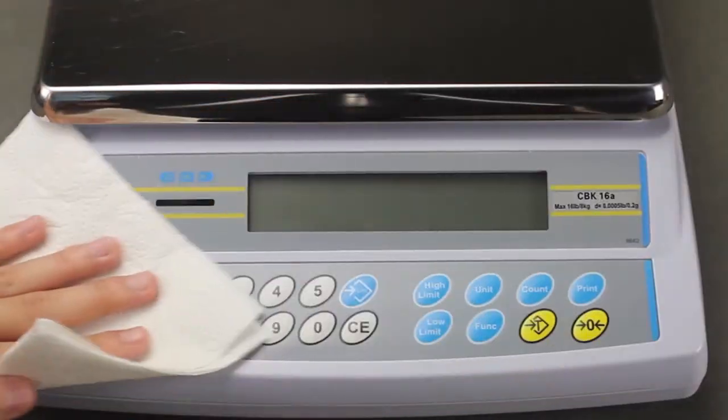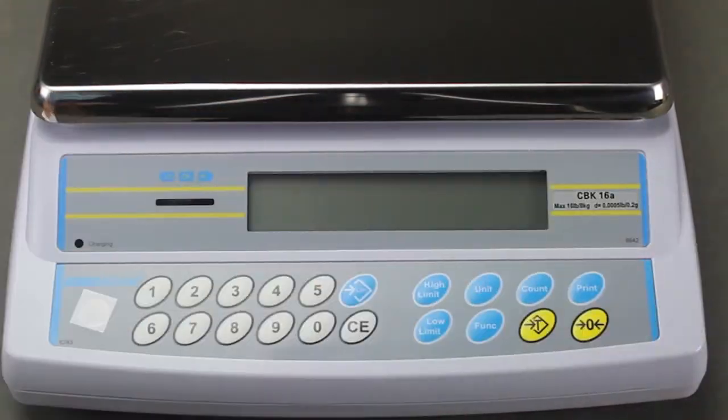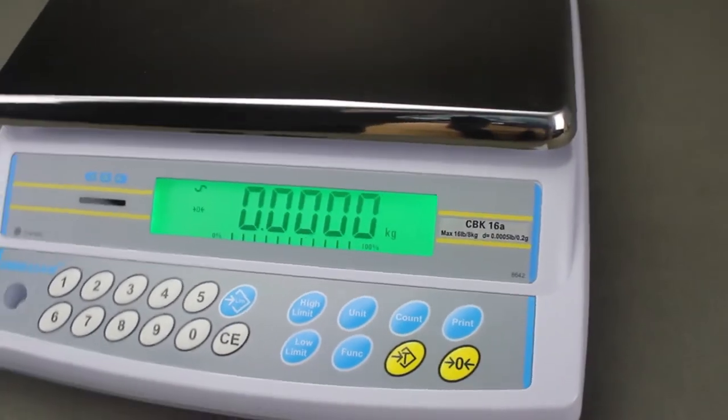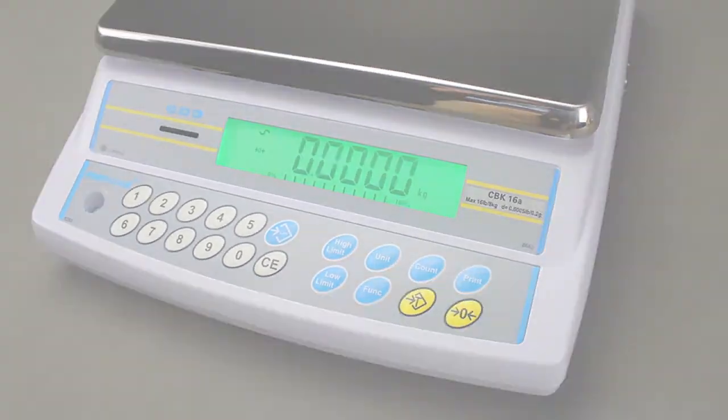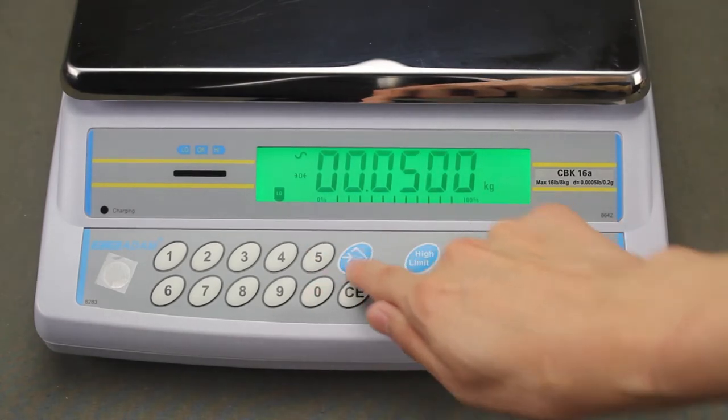An easy to clean keypad is sealed to protect against dirt and spills. A large backlit display is highly visible in any lighting conditions. Color-coded keys highlight frequently used functions, simplifying operation.